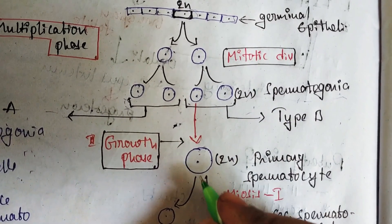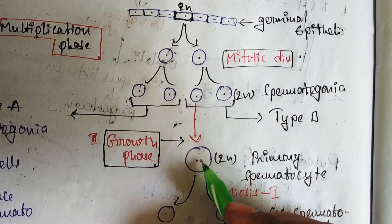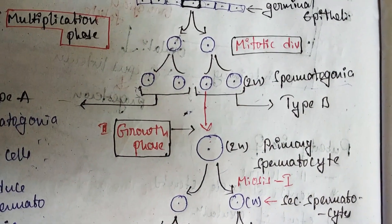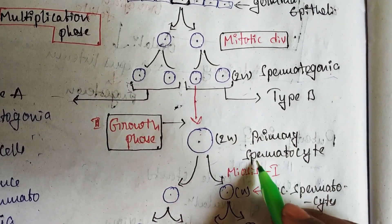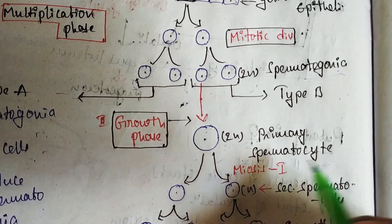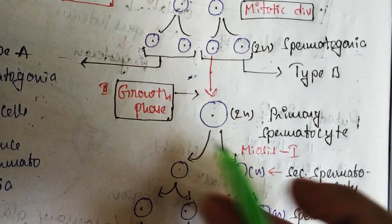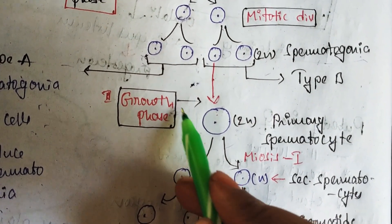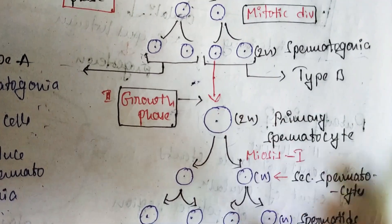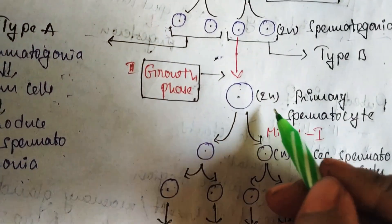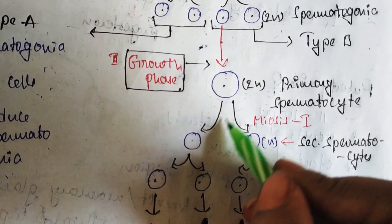Type B spermatogonia produce daughter cells that utilize nutrients to grow bigger — this is the growth phase. The cells are still diploid in nature and then become primary spermatocytes. After the growth phase, by utilizing nutrients, the cell undergoes enlargement to form primary spermatocytes.